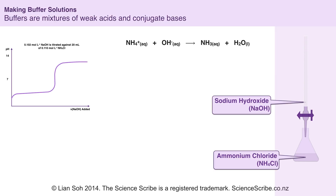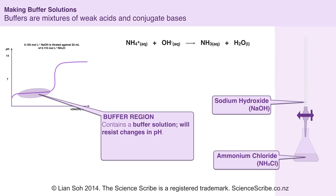I noticed that near the start of the titration curve there is a region where we added a lot of sodium hydroxide but the pH did not climb very high. This area is called the buffer region. It is called a buffer region because it contains something called a buffer solution. A buffer solution is any solution that can resist changes in pH, and in this case it is a mixture of weak acid and conjugate base.